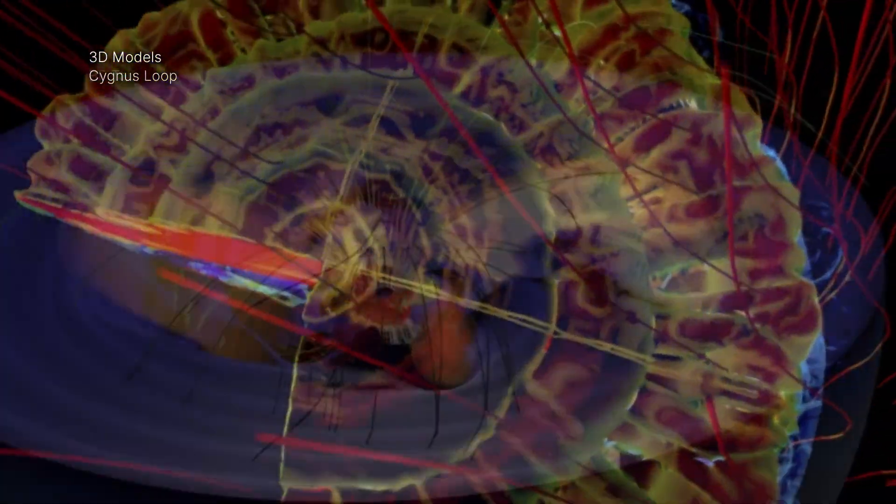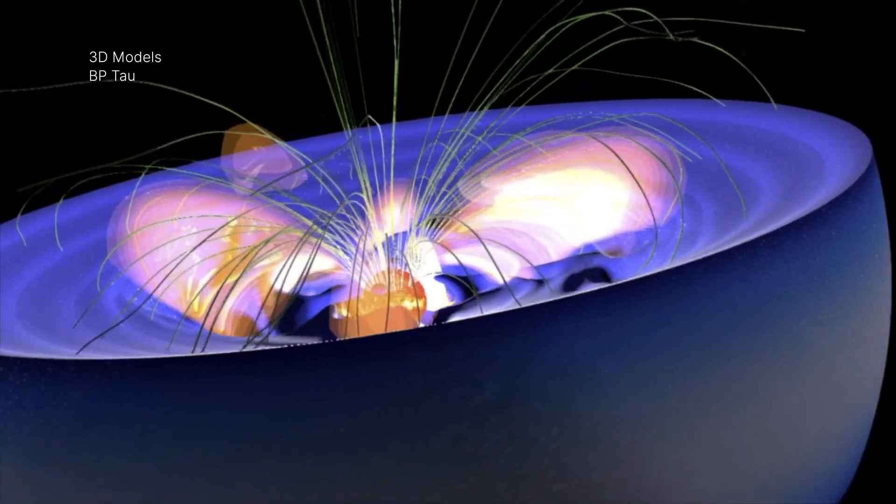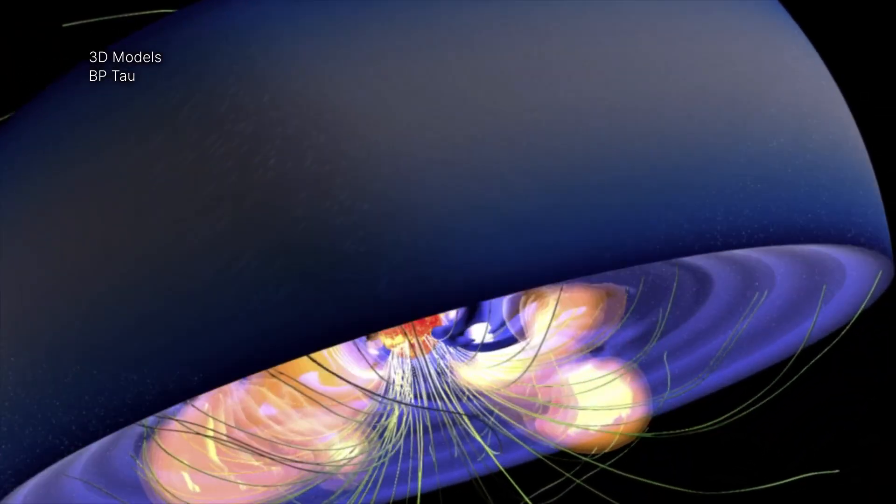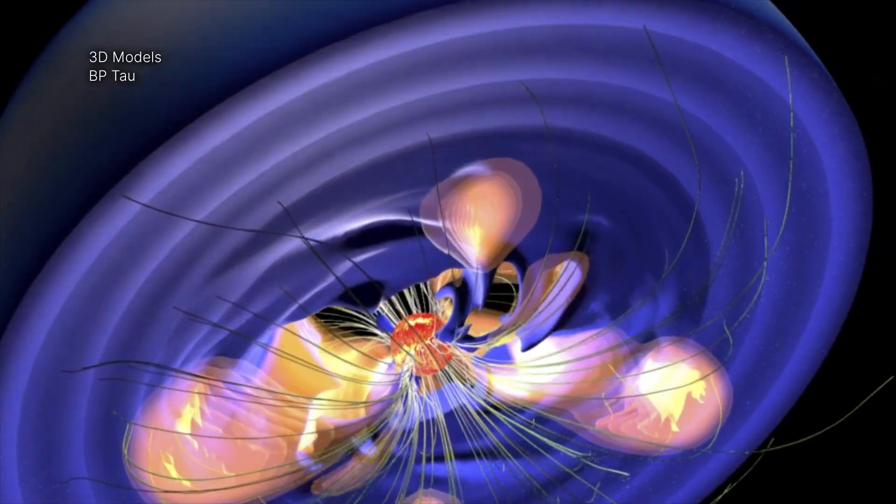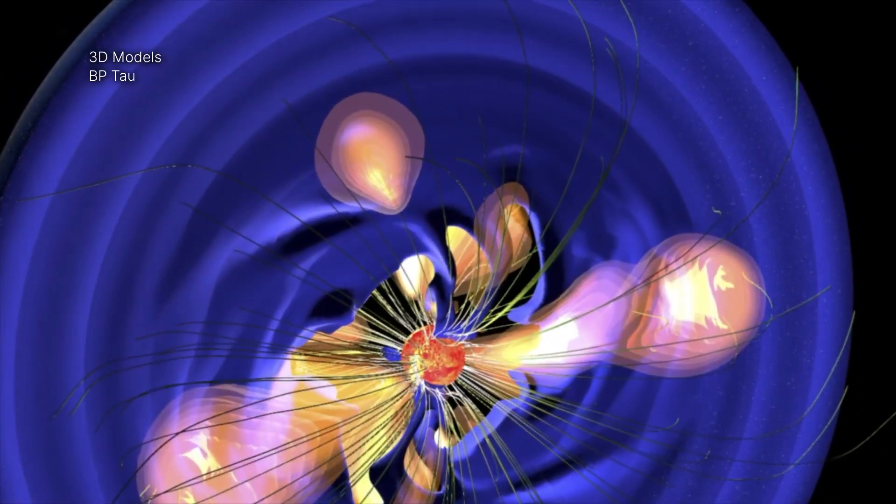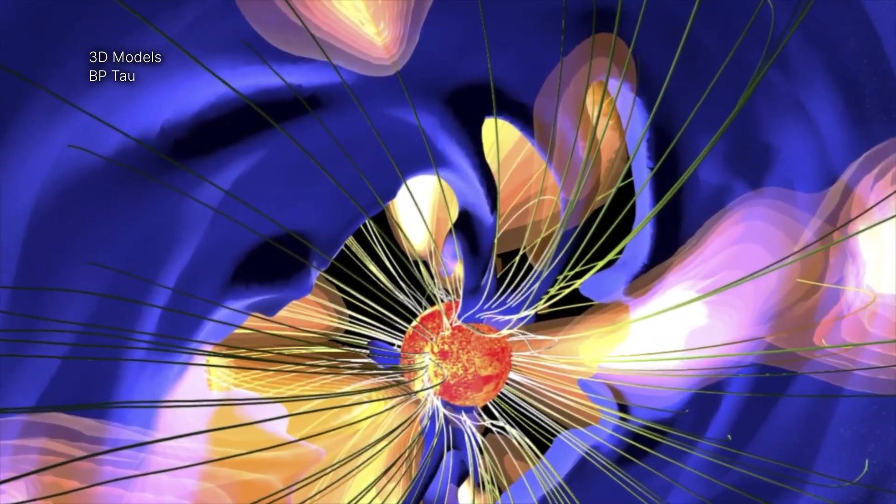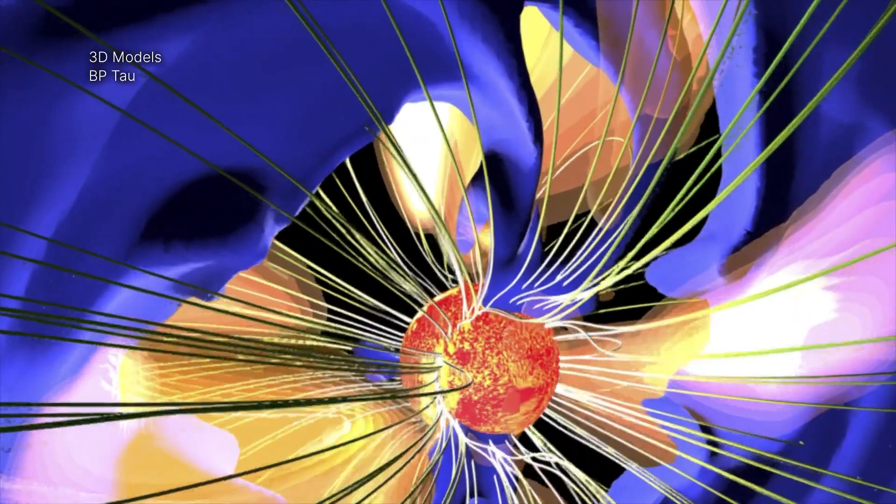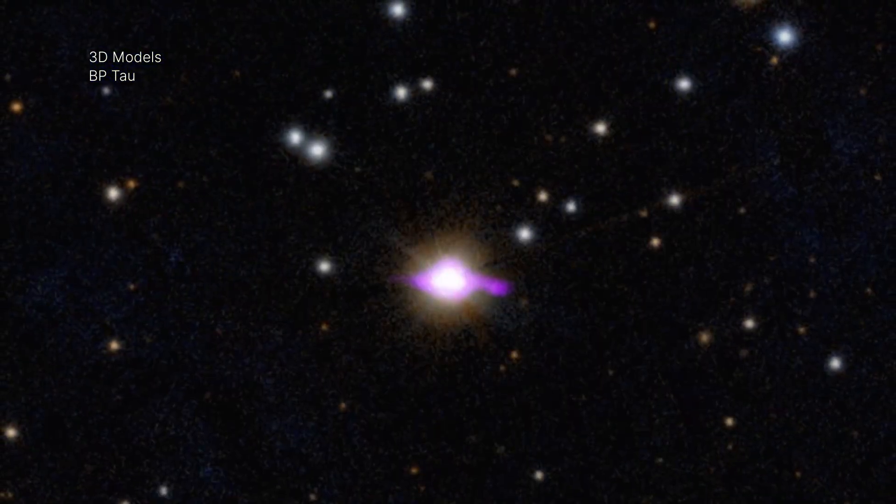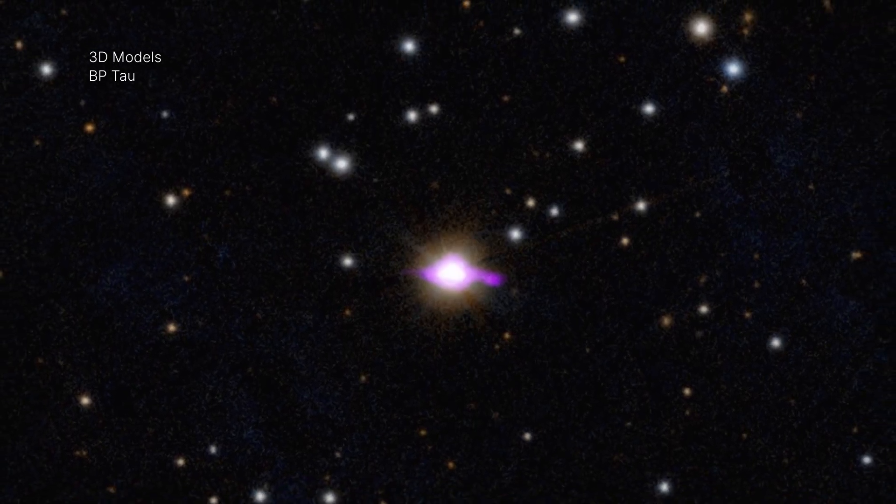Finally, a 3D model shows a star less than 10 million years old that is surrounded by a disk of material. This object, called BP Tau, has flares that interact with a disk of material surrounding this infant star. Looking at BP Tau gives us insight into our own sun billions of years ago.